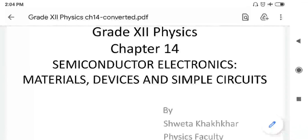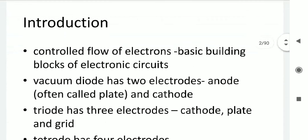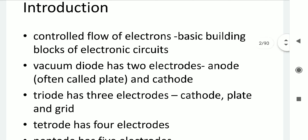Hello students, let us start our session of Chapter 14: Semiconductor Electronics — Materials, Devices and Simple Circuits. Here we are defining the flow of free electrons within the material itself. This flow of electrons we are going to control by applying external field or high temperature. This is a basic fundamental concept — how we can control the current, which is an important thing for electronic circuits.